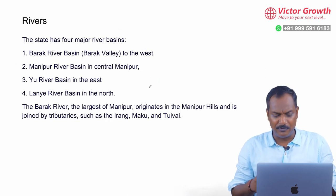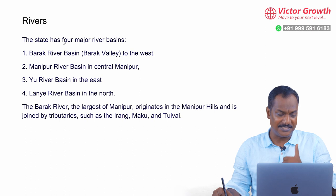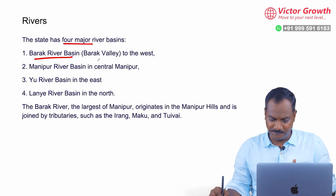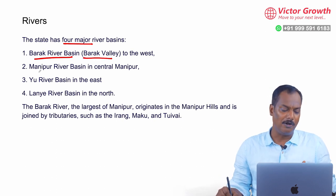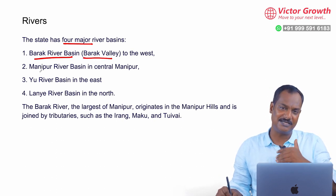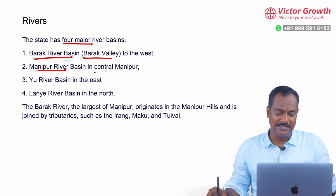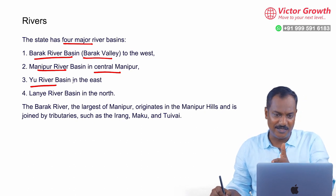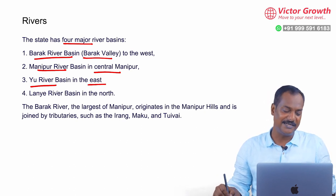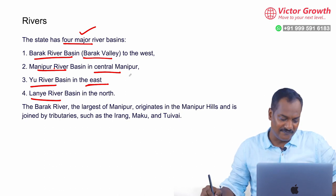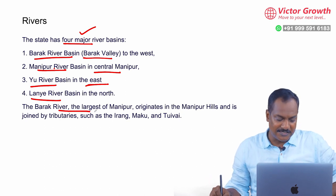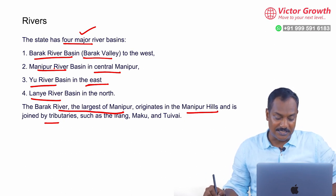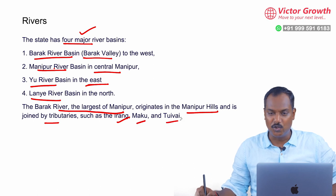If you look at the geography of Manipur, basically rivers — you have four major rivers. One is the Barak River Basin, which is the largest river of Manipur. We also have the Manipur River in the central part of Manipur, the Iril River Basin, and in the north side a river called Lanye River. The Barak River originates from the Manipur Hills and has many tributaries, including Irang, Makku and Tuivai.